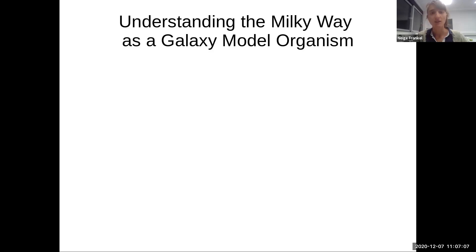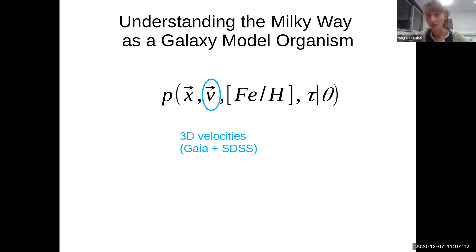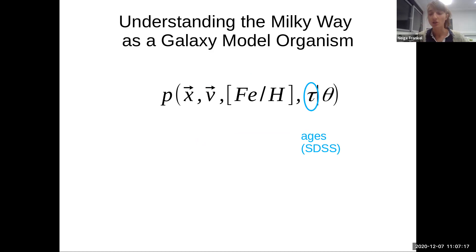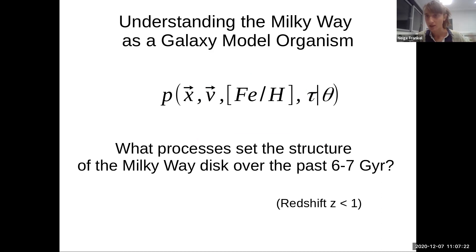Now that we have these two questions — the exponential profile and the clumpiness of star formation — imagine if we had one galaxy to which we can ask: where were your stars born and where are your stars today? How much insight it would bring to these two questions. This is what we're about to do now with the Milky Way. We can take the Milky Way as a global model organism for formation and evolution of these galaxies. For many of its individual stars, we know the 3D position, the 3D velocity, abundances and ages.